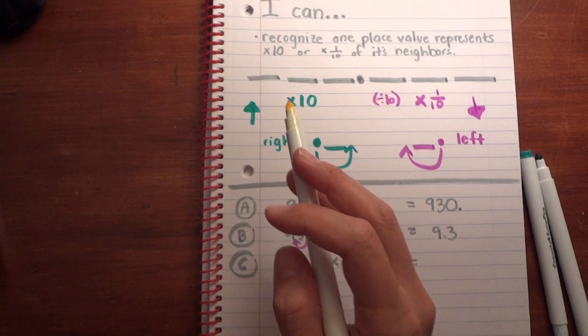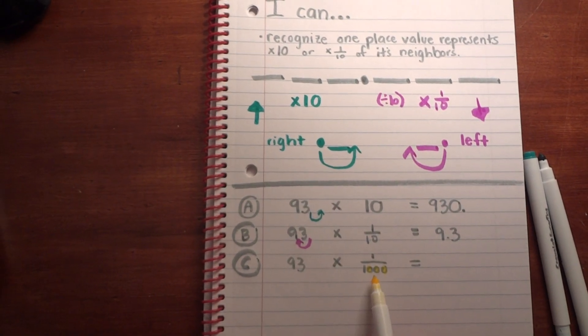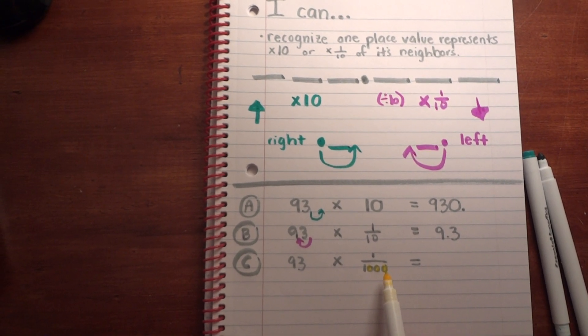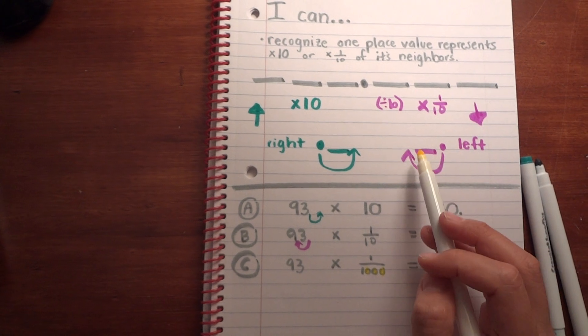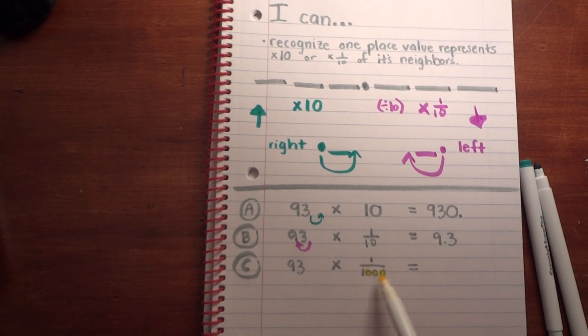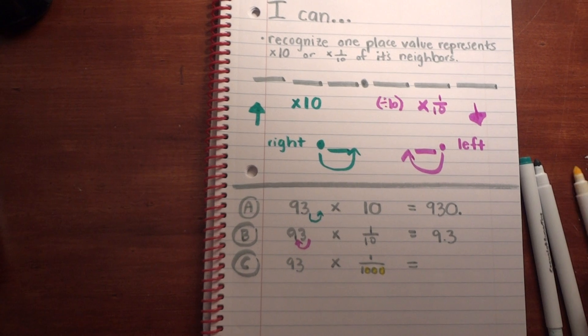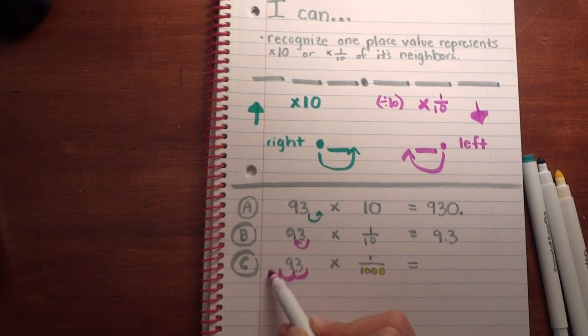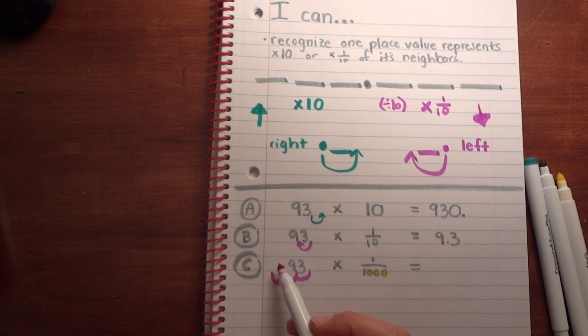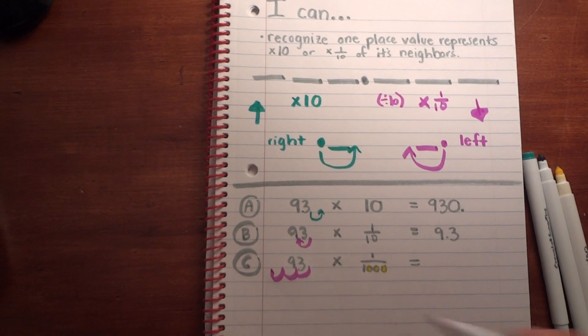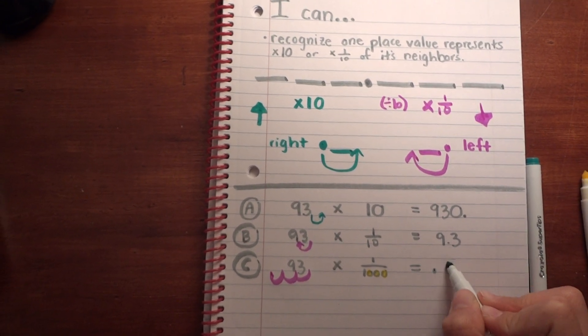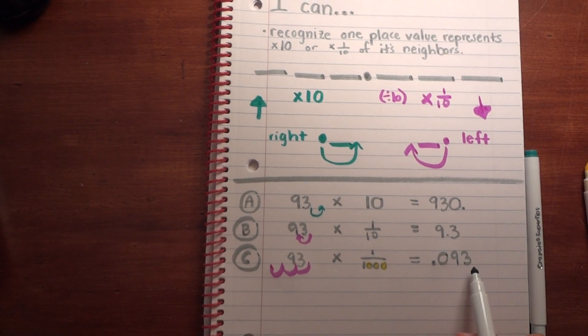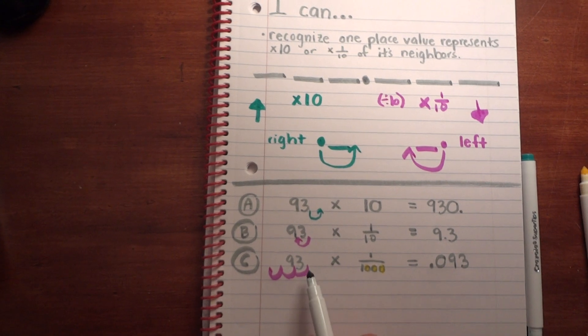The little trick is you check out the zeros in what you're multiplying by. One-thousandth has three zeros, you're decreasing its value, moving it to the left because it's a fraction less than a whole. Take your decimal, move it over one, two, three times. There's no number at the end there, so you have to add in a zero to hold its place value. Your new number is 93 thousandths—93 thousandths is one-thousandth of 93.